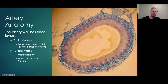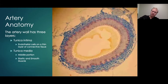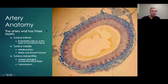And then the adventitia, which in this slide is stained blue, provides a lot of the tensile strength to resist dilations, fusiform aneurysms, and that type of thing. Those can grow when this layer is violated. Also, the blood supply to the artery itself is in this region as well — the vasa vasorum.